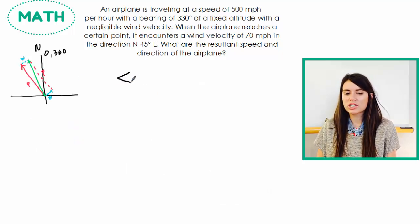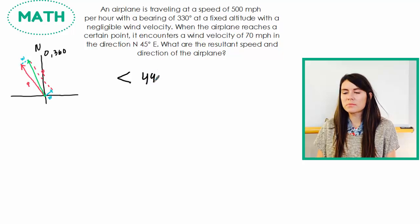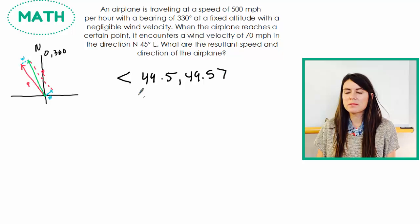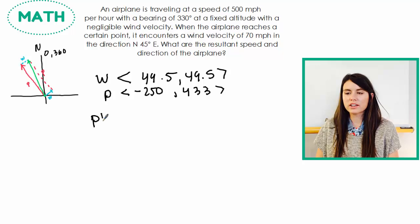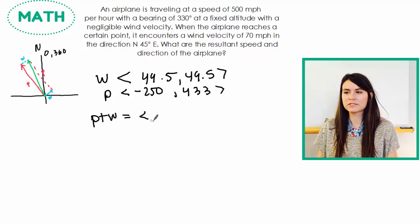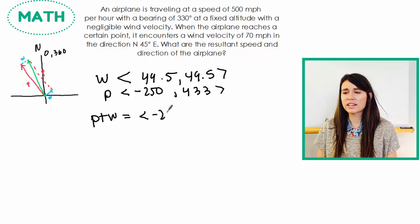So my wind vector was 49.5, 49.5, and my plane was negative 250, 433. So I need to figure out what they are together to make my new vector. So that's this green vector here. So together it's negative 200.5 and it is 482.5.